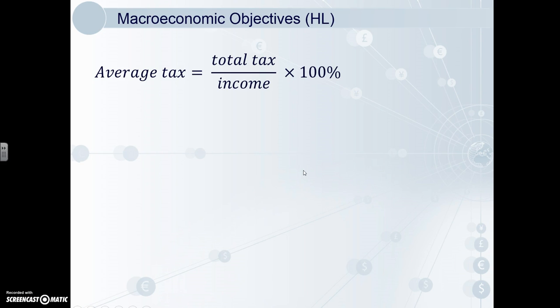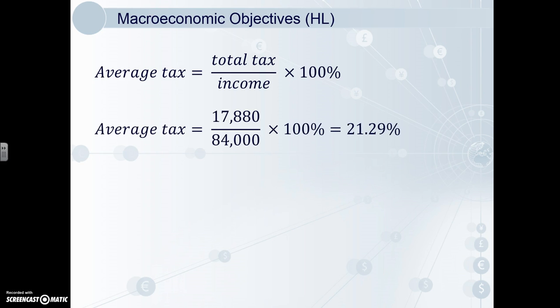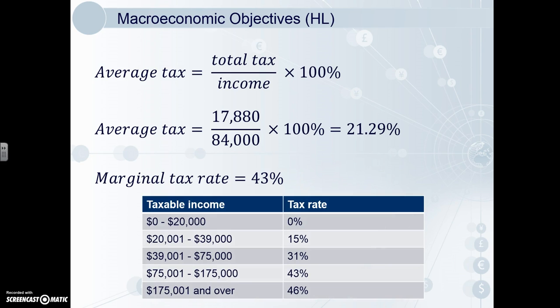Moving on to his average tax: divide the total tax he paid by his income and multiply by 100. Plugging the numbers in, his average tax rate is 21.29% — again, make sure you include the percentage sign. His marginal tax rate is 43%, because at his current earnings of $84,000, each additional or marginal dollar is taxed at 43%. And that's it for HL Macroeconomics — there's nothing too hard there.